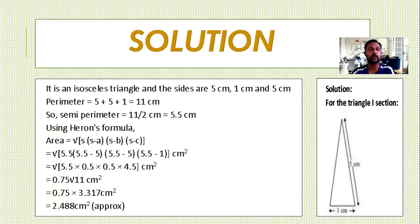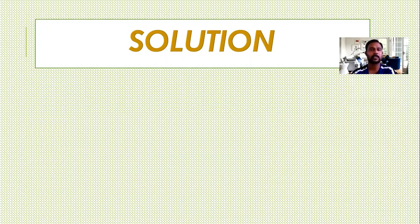See the calculations. Finally, you will reach at 0.75 root 11. Root 11 is approximately 3.317. Multiplying you have 2.488 cm square. So we find area of part 1. Now let us go for next part.